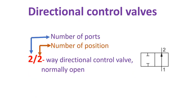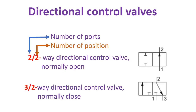Here is one example of directional control valves. The first letter represents the number of ports and the second letter represents the number of positions. This valve is a two two-way directional control valve, normally open. The next one is a three two-way directional control valve, normally closed.